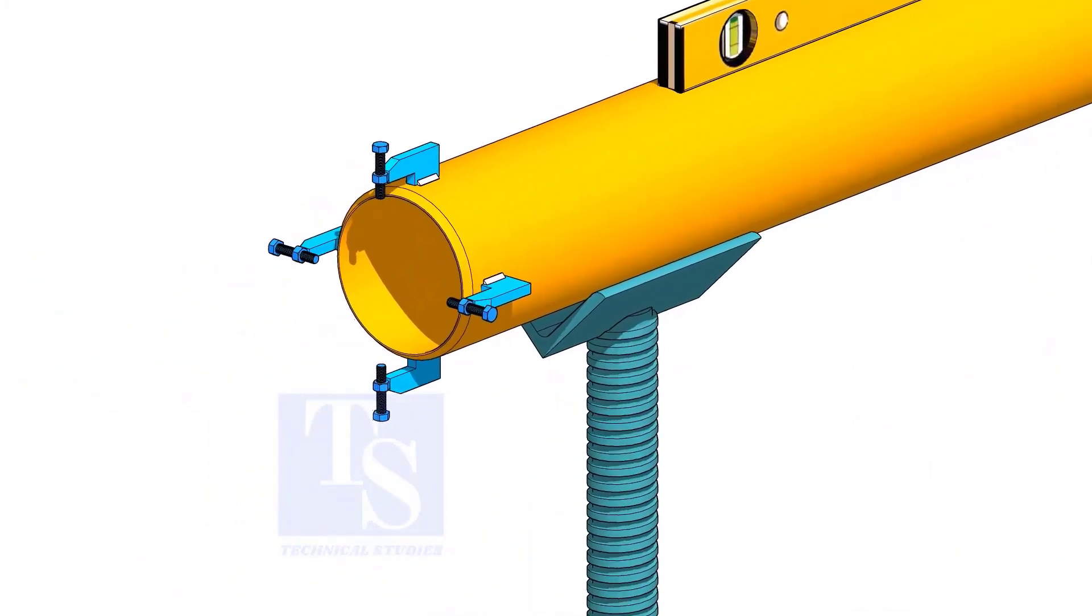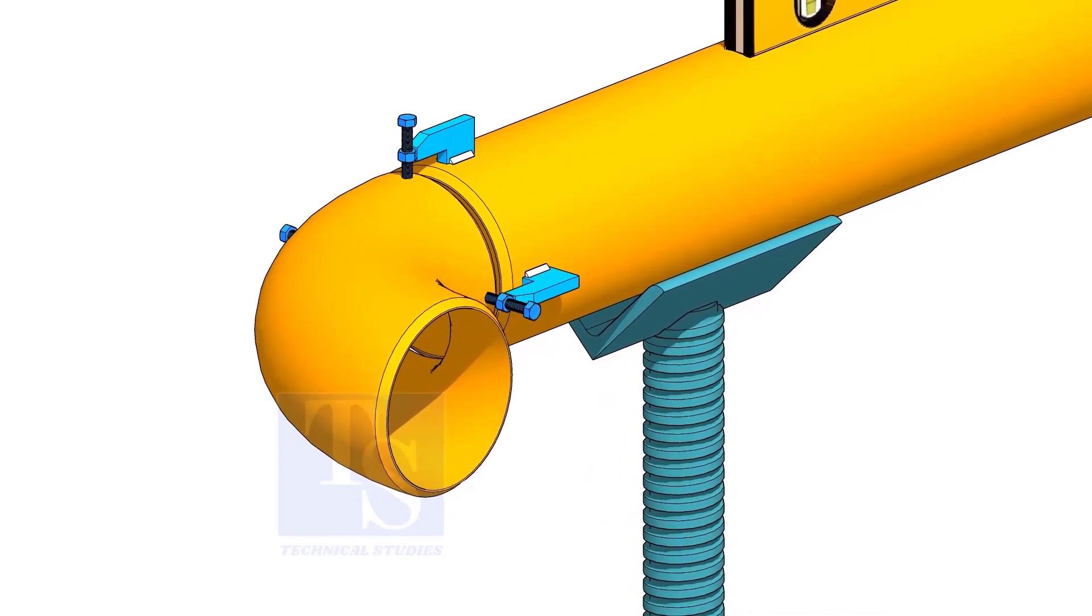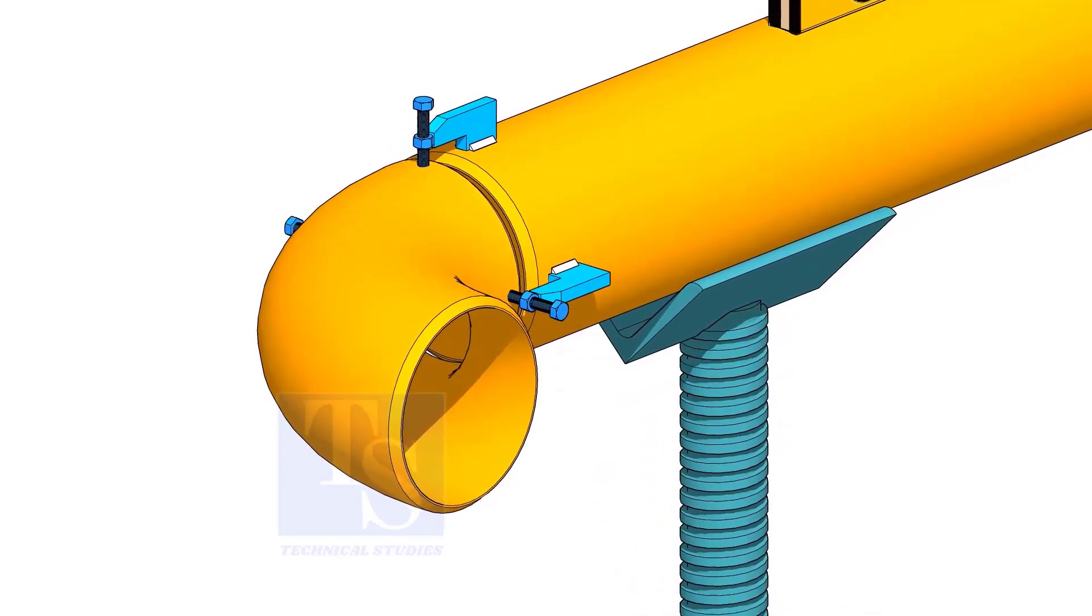Fix the clamps on the pipe. Put the elbow and the gap rod and slightly tighten the clamp bolts.